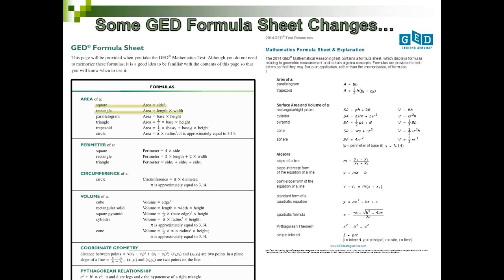Area of a square or rectangle is no longer provided. The parallelogram still exists but is written as B times H instead of words. Triangle area is no longer available. Trapezoid is there but in just variables. Circle area formula is no longer provided. Perimeter formulas for square and rectangle have been deleted, and the circumference of a circle formula is also missing. The volume formula for a cube is also no longer on the new formula sheet.